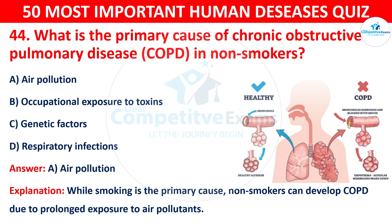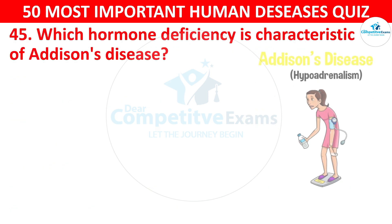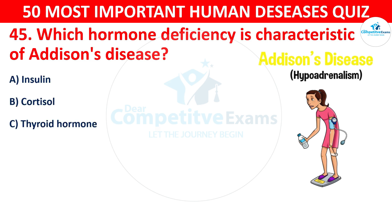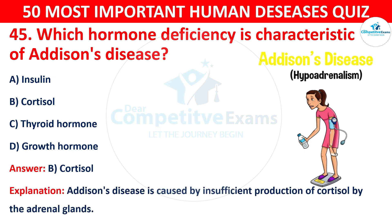Question 45: Which hormone deficiency is characteristic of Addison's disease? The options are: A) Insulin, B) Cortisol, C) Thyroid hormone, or D) Growth hormone. The correct answer is B — cortisol. Addison's disease is caused by insufficient production of cortisol by the adrenal glands.